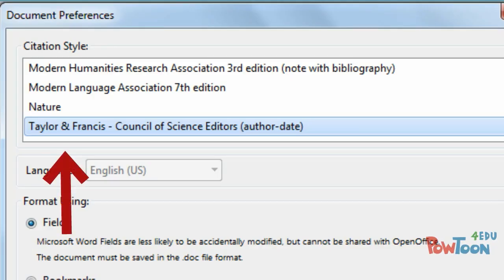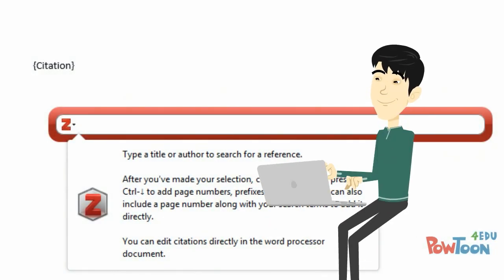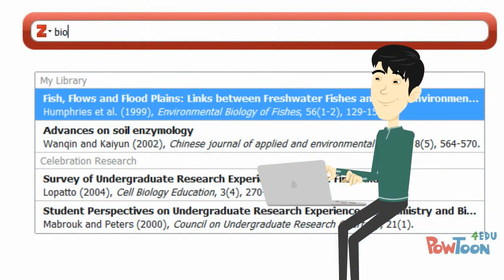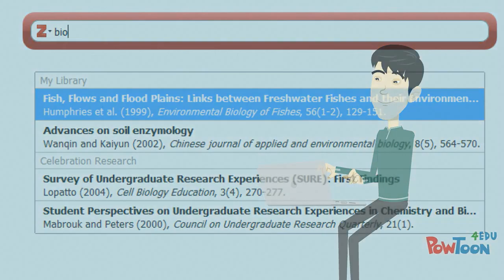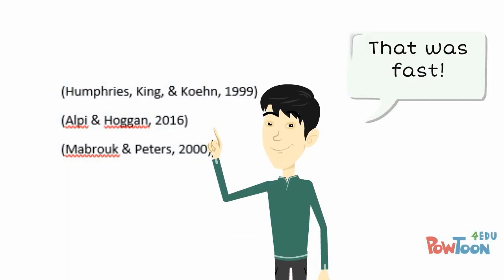A search bar will appear that will allow you to search all of the citations that you have saved in the Zotero pane. Just start typing a title or even just a keyword, and sources with those words will appear. Select the one that you want, and an in-text citation will be created.